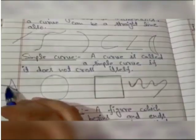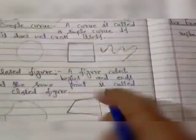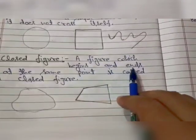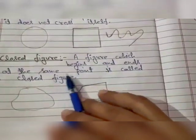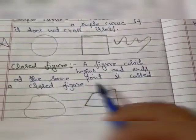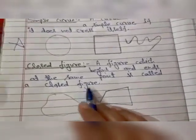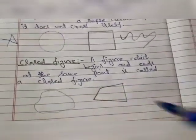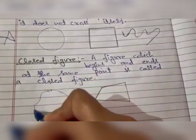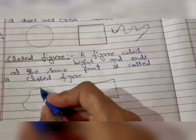Now closed figure. A figure which begins and ends at the same point is called a closed figure. Closed figure کا meaning ہے a figure which begins جو جہاں سے start کرتا ہے وہیں پر اس کا end ہو جاتا ہے. The starting point and end point are the same.